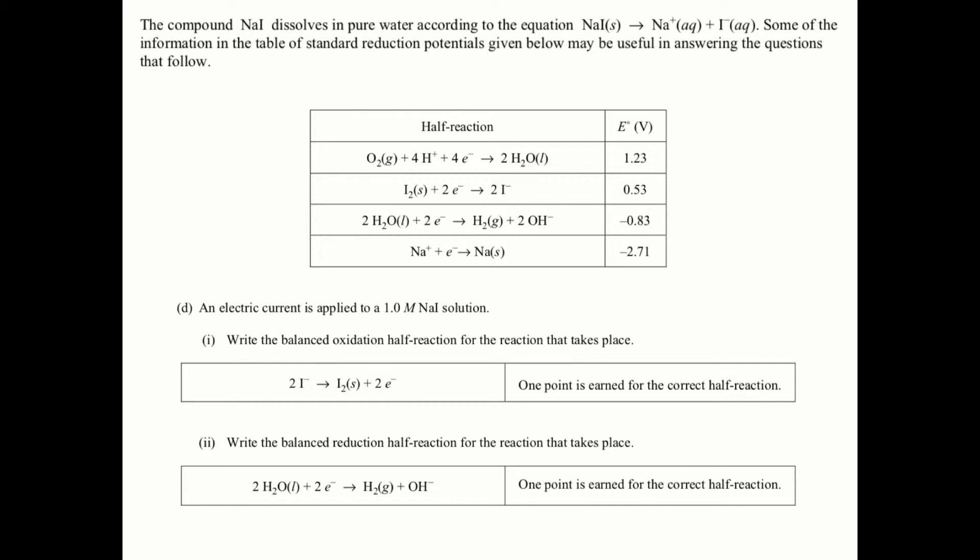Write the balanced oxidation half-reaction for the reaction that takes place. This problem gets people over and over again. Remember, if I have sodium iodide being dissolved in water and I impart an electrical current on it, there are going to be four different possible reactants: I've got Na+, I've got I-, and I have H2O. Which means those first two half-reactions there, water and iodide, those have to be flipped because water and iodide and I- have to be reactants.